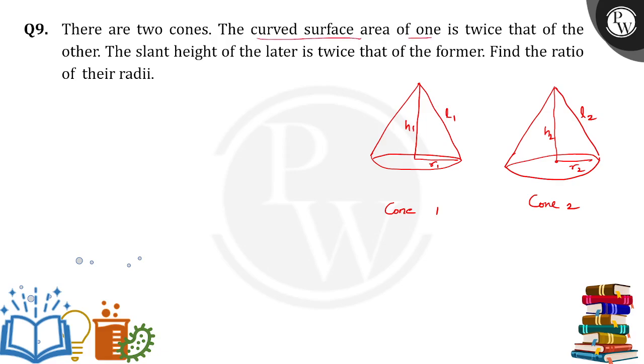The curved surface area of one is twice that of the other. So, CSA of cone 1 is equal to two times CSA of cone 2. Okay, so CSA of cone 1 is what? Pi R1 L1 is equal to 2 pi R2 L2.